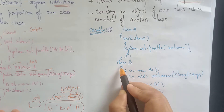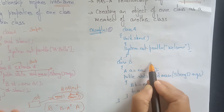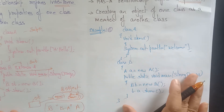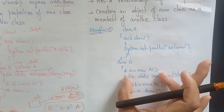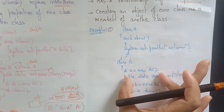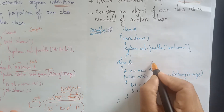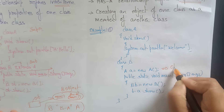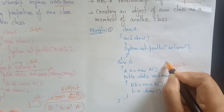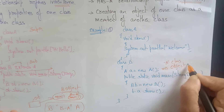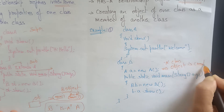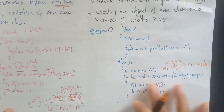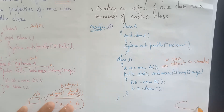Now for the 'has-a' relationship: I am not using the extends keyword, I am not inheriting. Instead, I am creating an object of class A as a member of class B. So I am creating an A class object inside class B without using extends.